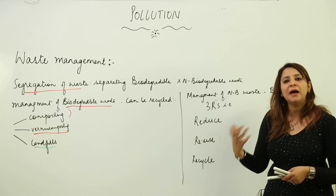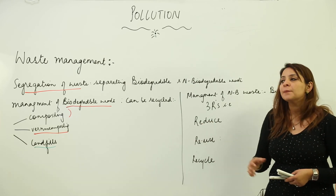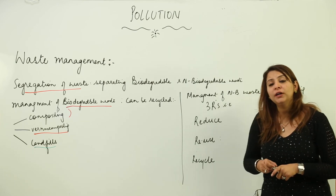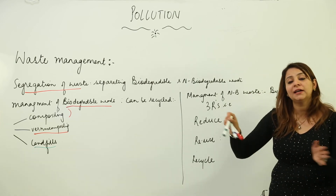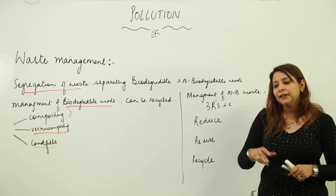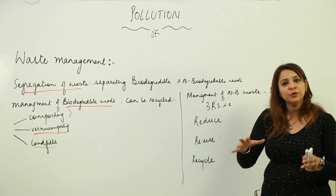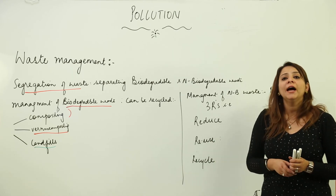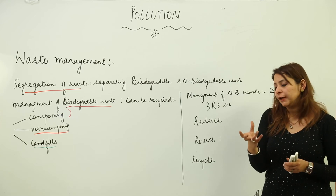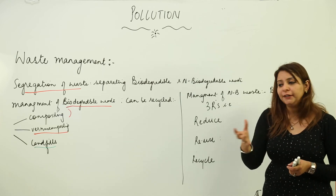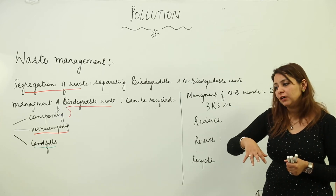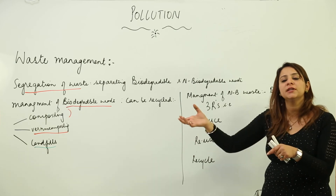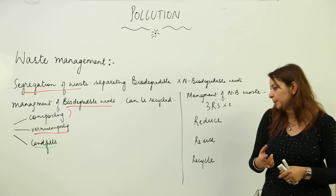The second R is Reuse — try to reuse items again and again. For example, instead of throwing a plastic bag away, use it again for carrying things. Similarly, with paper — since paper comes from wood and wood comes from cutting trees — we can use leftover paper for writing. Old newspapers can be sold to a scrap dealer who sends them to recycling industries.